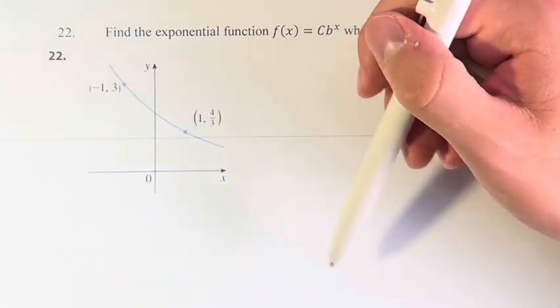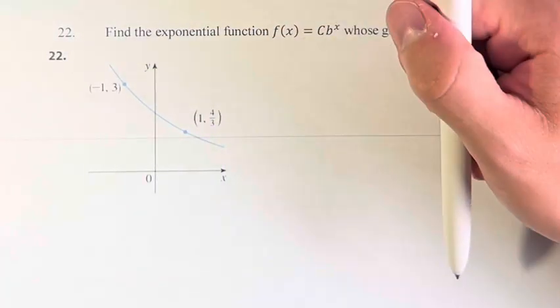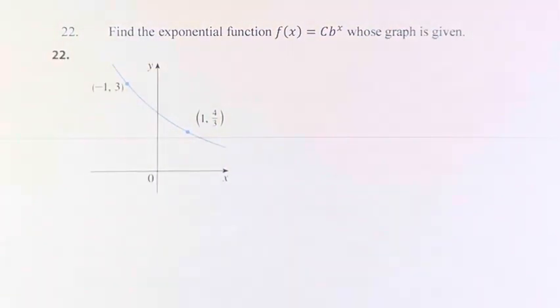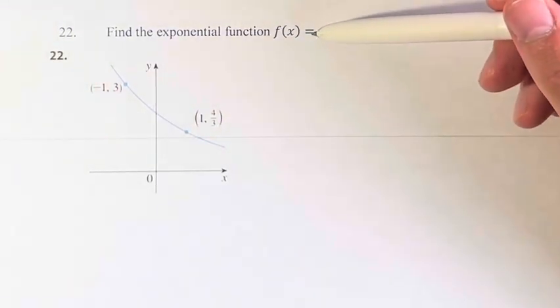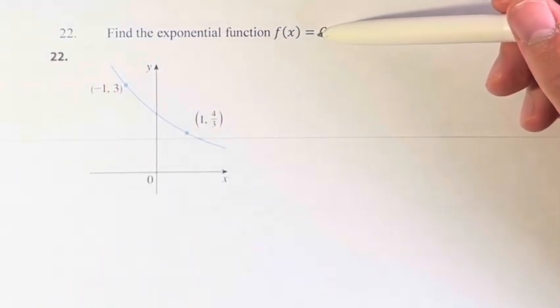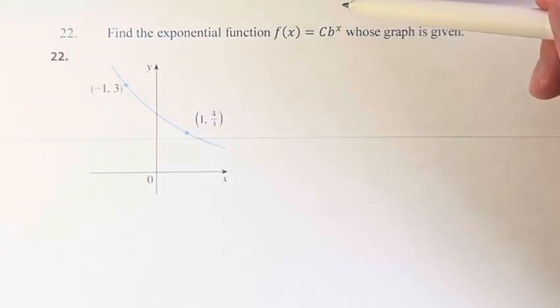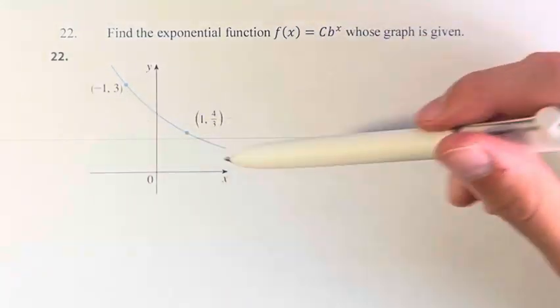So here we have an exponential function with points (-1, 3) and (1, 4/3) on it. So what we're going to do is plug these points back into the equation, which is going to give us expressions containing b and c, two of those, and we can solve for the individual variables.